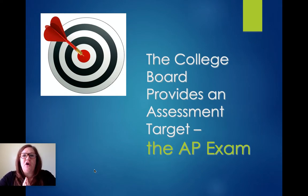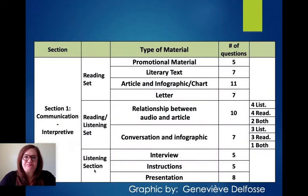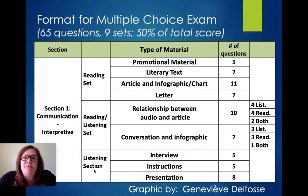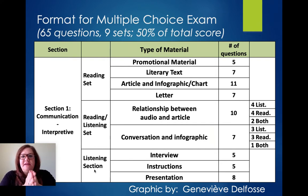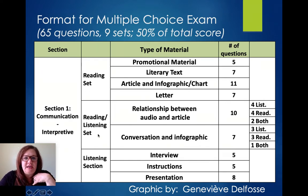The College Board provides an assessment target — the AP exam. If our ultimate end target is the AP, we need to start thinking backwards from that. The first half of the exam is 65 questions in nine different sets, and it's fifty percent of your total score.